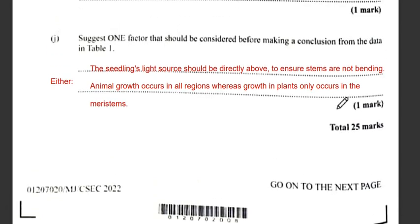One factor to consider before making a conclusion from the data is that the light source should come directly from above to ensure the stems are not bending. Also, animal growth occurs in all regions, whereas growth in plants normally occurs in the meristem.